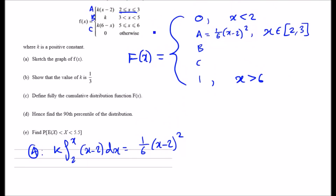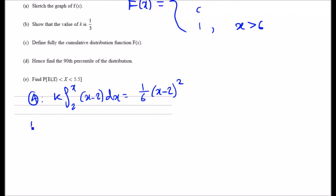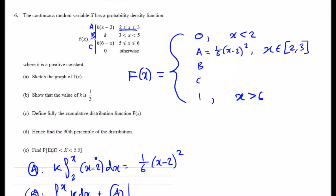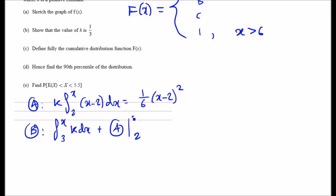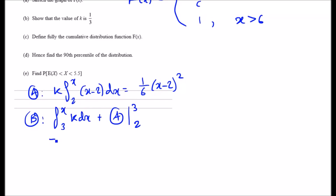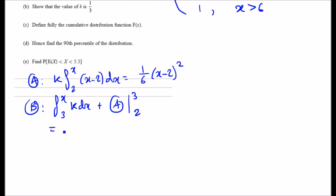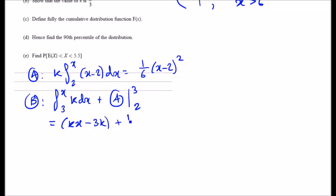For piece B (interval 3 to 5), integrate k from 3 to x, and add piece A evaluated from 2 to 3. Integrating k gives kx minus 3k. Plugging 3 and 2 into piece A gives one sixth. Tidying up and substituting k equals one third, you get x over 3 minus 5 over 6.